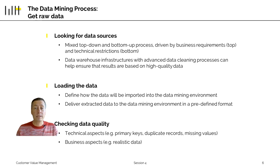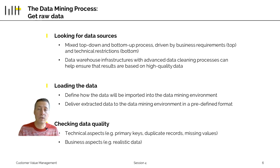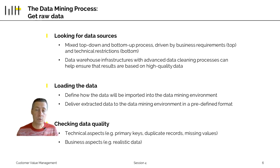Once we have rephrased the question from action to information orientation, we need to look for data sources. This is very often a top-down, bottom-up process, where you say what you would ideally like to have, and the IT team tells you what can actually be obtained with reasonable effort. Some things may simply not be available, and others might take a tremendous amount of effort to get. Possibly they can be replaced by something similar that is much easier to get.